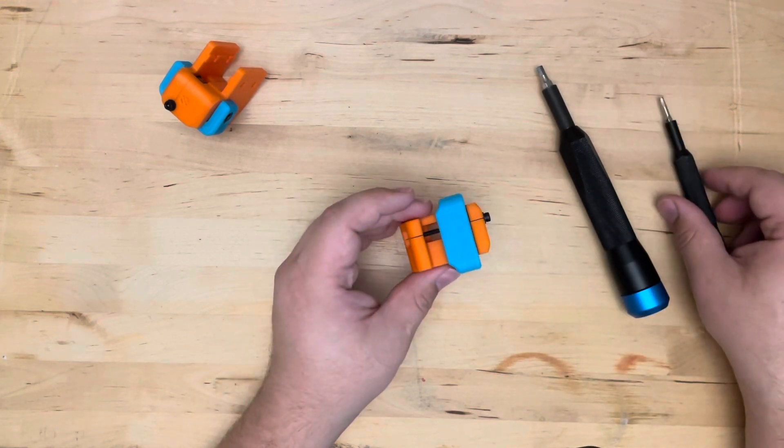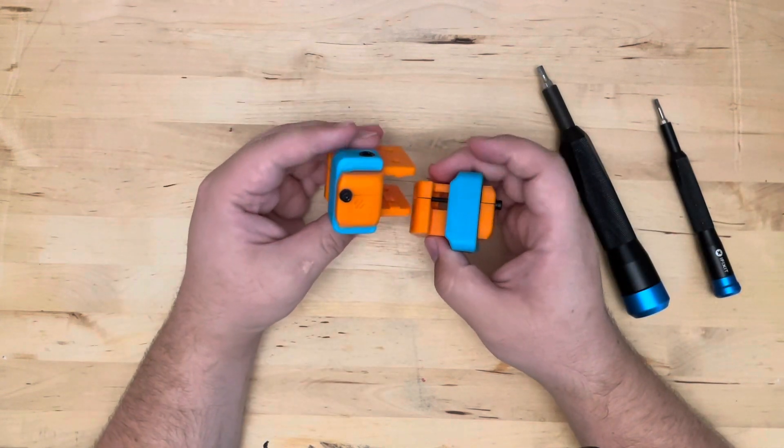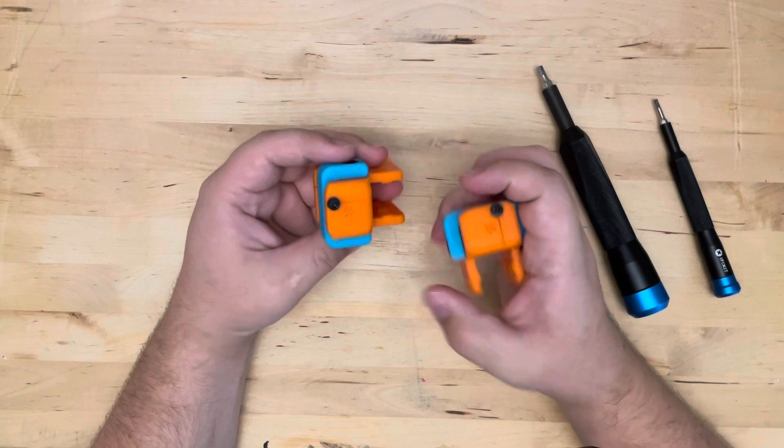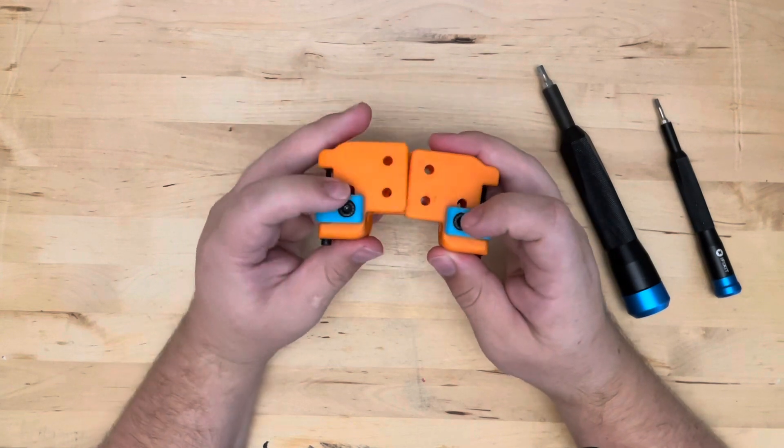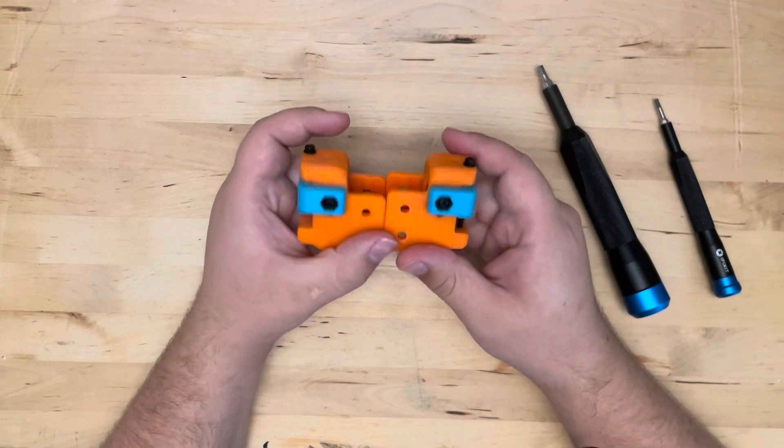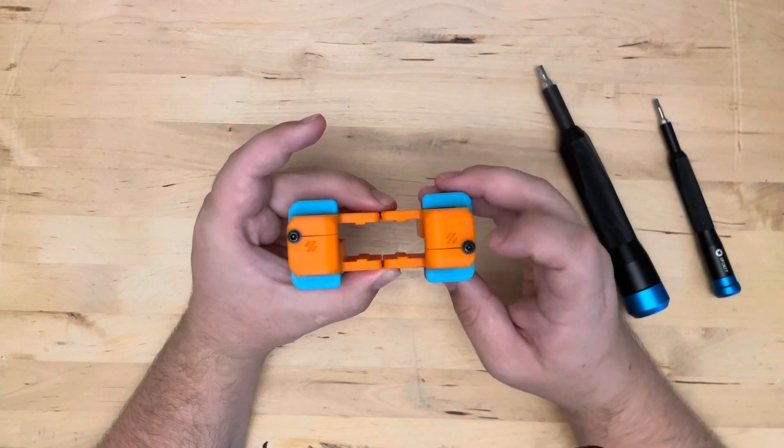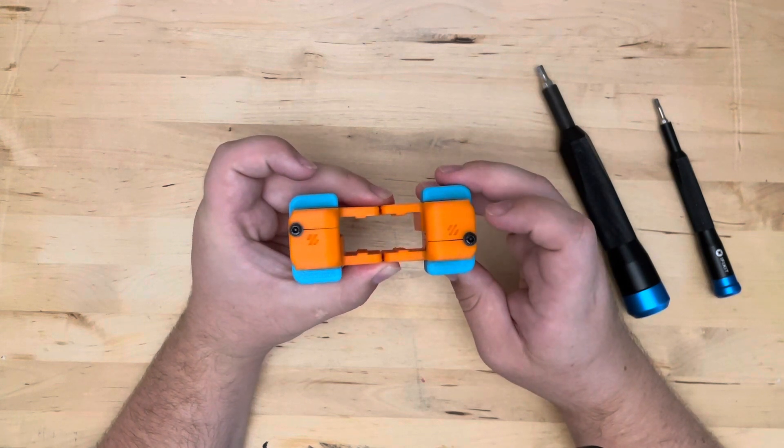And to do the other idler tensioner combo, you would just repeat the same steps. Obviously, it's going to be mirrored because here you can see the screw heads are on the top and the nuts are on the bottom and vice versa for the tensioning screws.